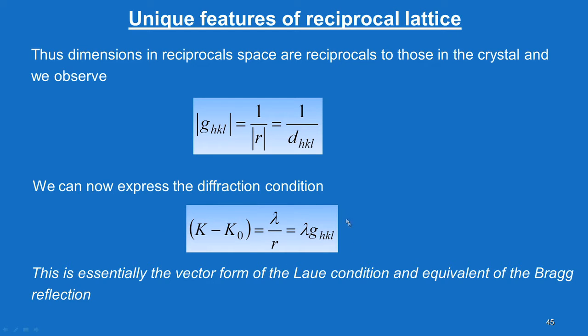We can express the diffraction condition in vectorial form: K − K0 = λ · G_HKL. This is essentially the vector form of the Laue condition and is equivalent to the Bragg equation. The Bragg law describes diffraction in a scalar form — Nλ = 2d sinθ — while we can also define the diffraction condition by this vector equation. We will see this in more detail in subsequent slides.